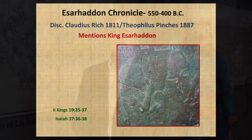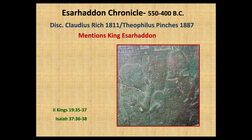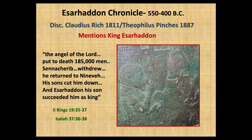Another king later on, Esarhaddon, has recorded some of his exploits. In an inscription dating from around 550 to 400 BC, discovered in 1811, it mentions King Esarhaddon. You can read about this contact with the Israelites in 2 Kings 19 and also in Isaiah chapter 37.